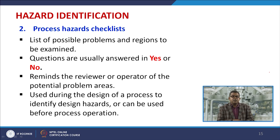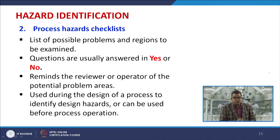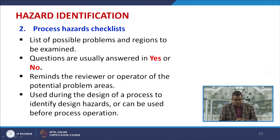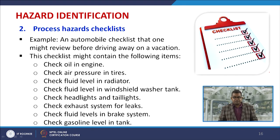A checklist must list possible problems and reasons to be examined — this is extremely important, as it helps identify problematic zones. Questions are usually answered in terms of yes or no regarding whether a hazard is present. It reminds the reviewer or operator of potential problem areas. Checklists are used during design to identify design hazards or before process operation begins. There are several examples of process hazard checklists.